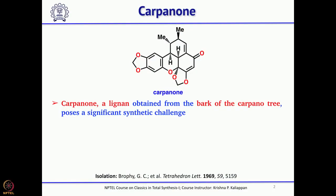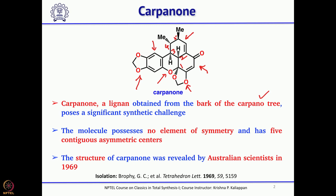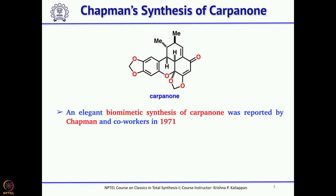Carpanone was isolated from the bark of the carpanone tree. As you can see from the structure, it has three six-membered rings and one aromatic ring, and also two five-membered rings. It poses enough synthetic challenge and has five contiguous asymmetric centers. There was a very interesting total synthesis reported by Chapman, involving two key reactions: an intramolecular Diels-Alder reaction and an oxidative coupling reaction.